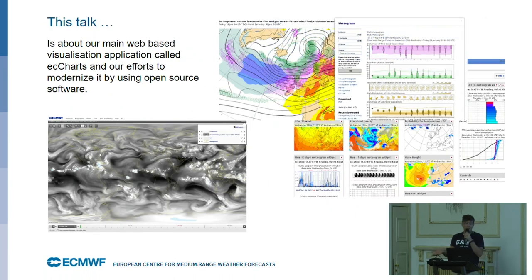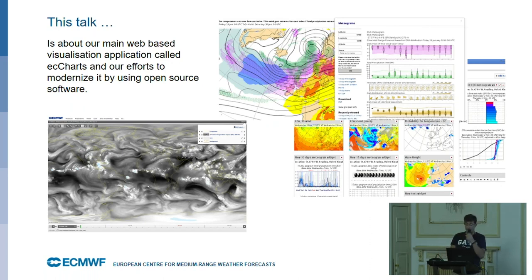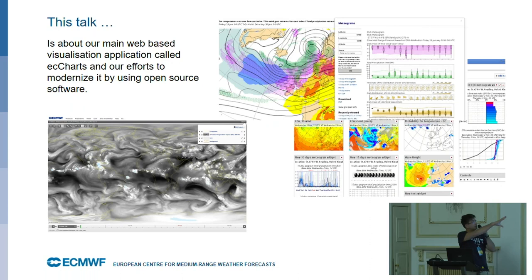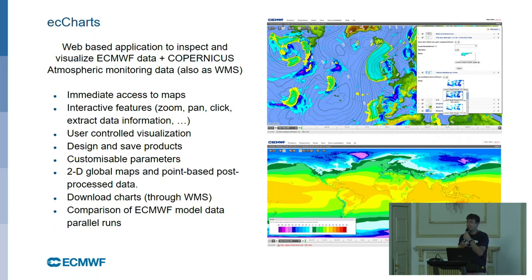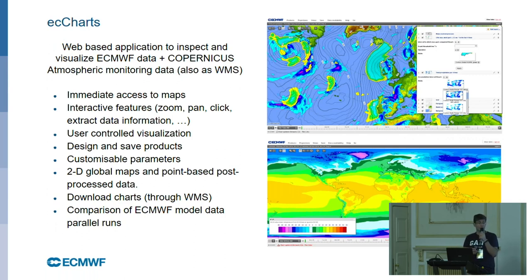This talk is mainly about the web-based visualization application we provide to our customers, called ECCharts, and our efforts to modernize it using open source software. ECCharts is a web-based application to inspect and visualize ECMWF data, plus the Copernicus services from the atmospheric monitoring data. We also provide all our layers and data through WMS graphical products.